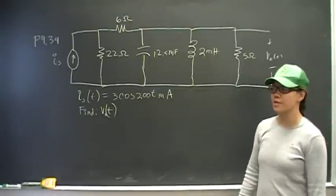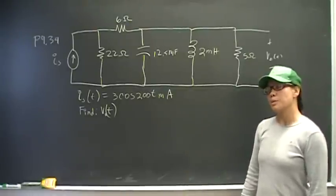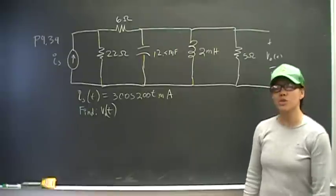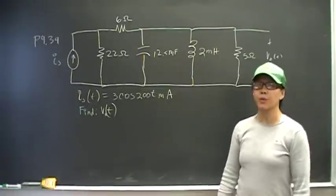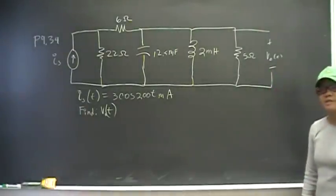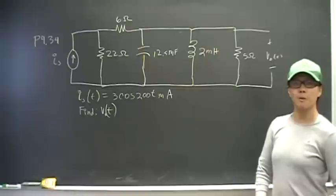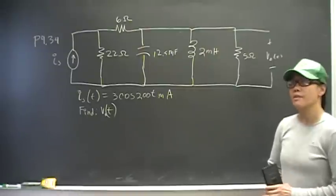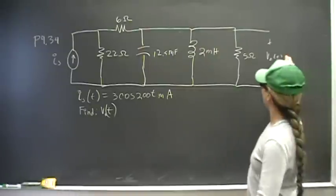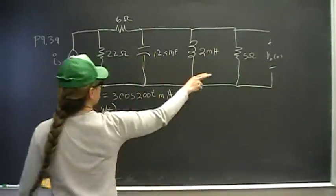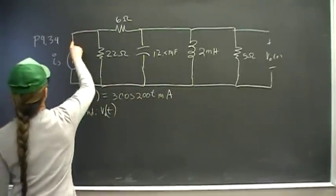You have so far superposition, source transformation, Y to delta transforms, equivalent resistances, equivalent impedances. So take from your toolbox something that makes sense. If I want to find current in terms of voltage...